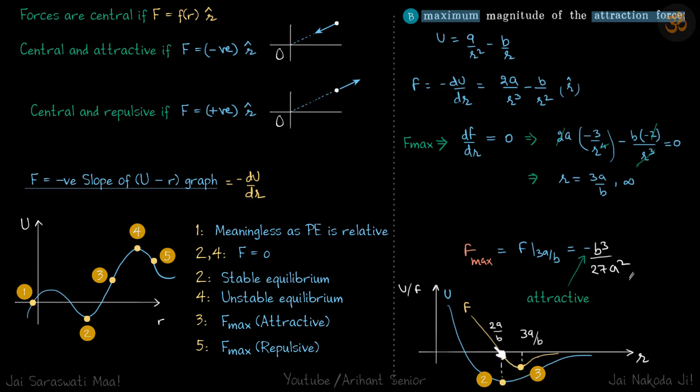When dF by dR becomes zero, that is the value of the maxima of the force. You can see here the slope is zero at both points, so in between the slope will be maximum on this U-R curve. On the force curve, the slope is zero, which means dF by dR is zero, giving the maximum value of force.